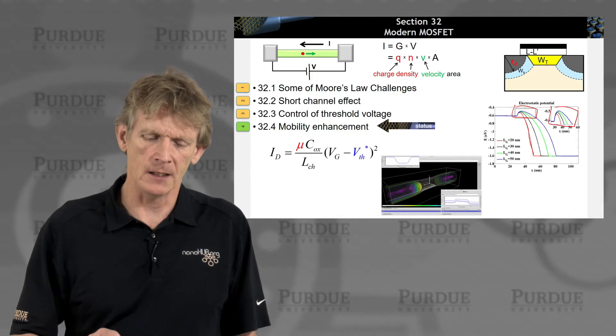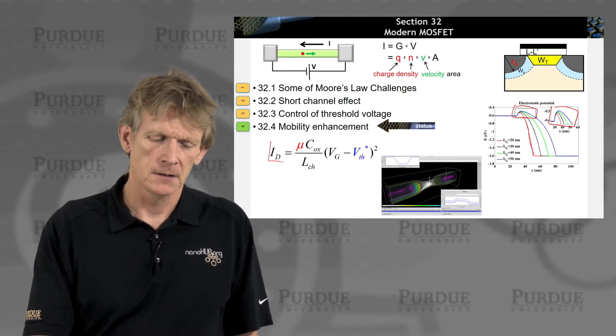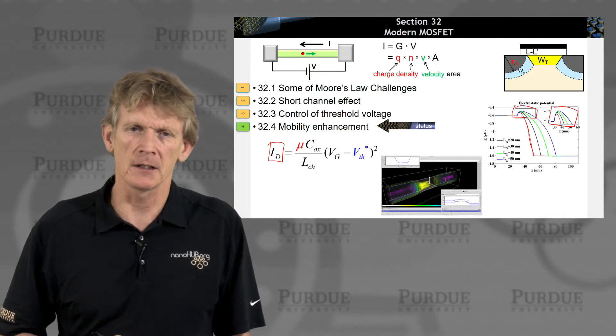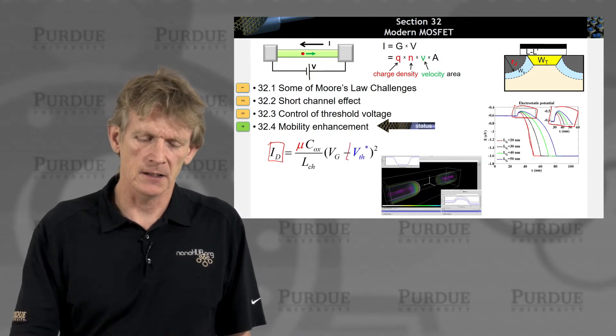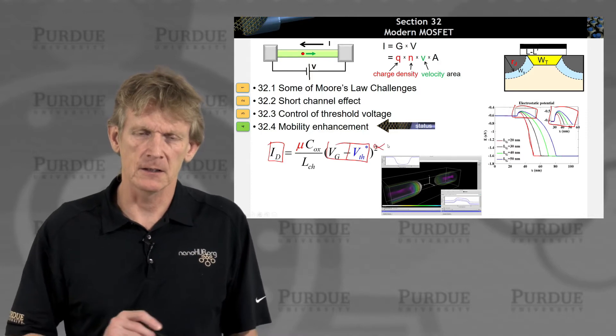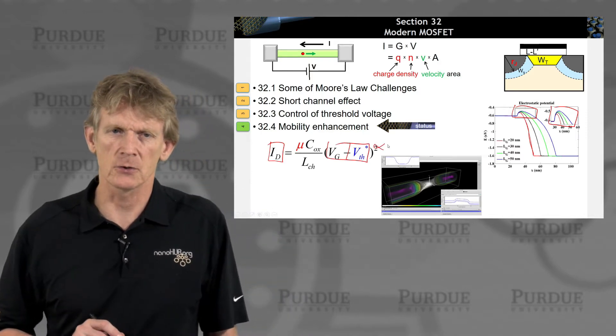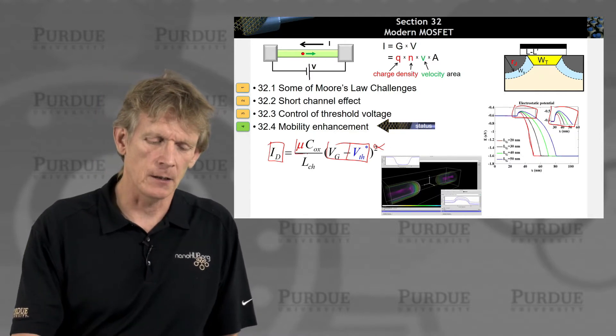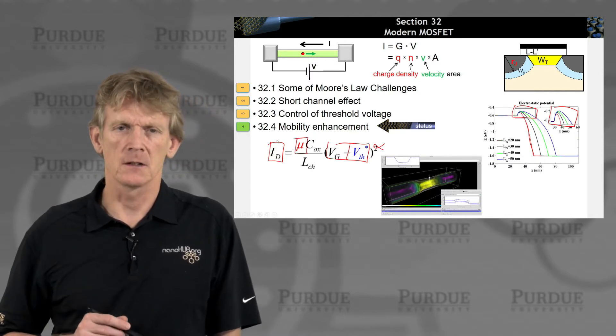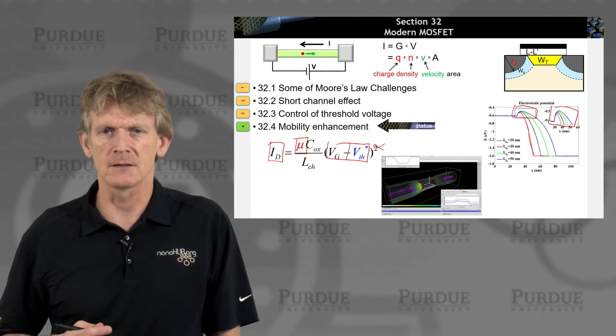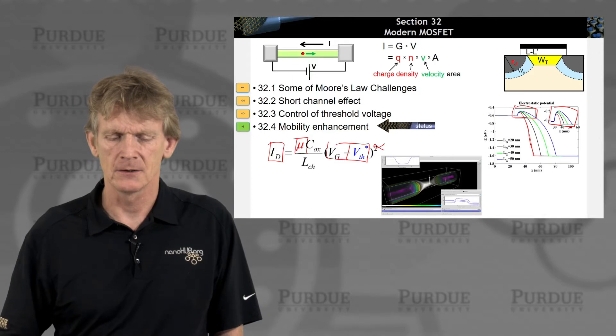And we had written down that the drain current capability scales as Vg minus Vth squared or ideally as some alpha. In the short channel it's closer to one. And there is a mobility up front in this current expression. So let's look at effects of mobility on this and see if there's some enhancements to be had.